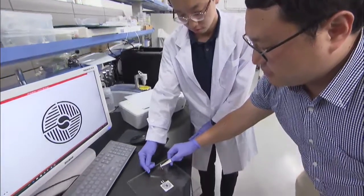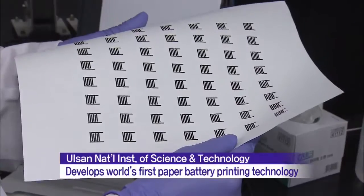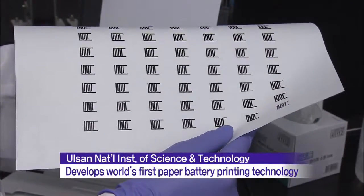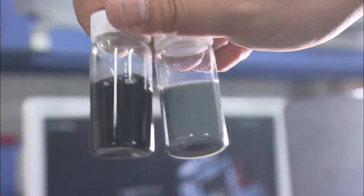These printed characters and images act as a battery. This paper battery, the first of its kind in the world, uses special ink made from battery elements such as electrodes and electrolytes instead of regular ink.